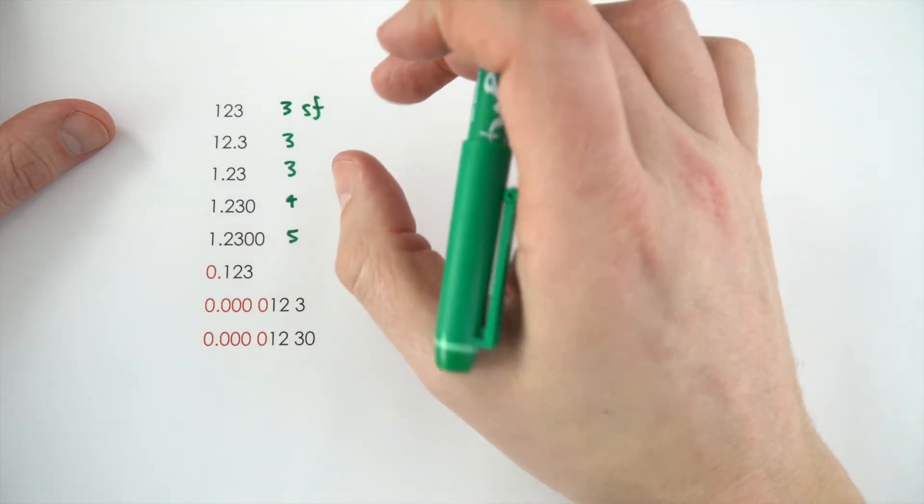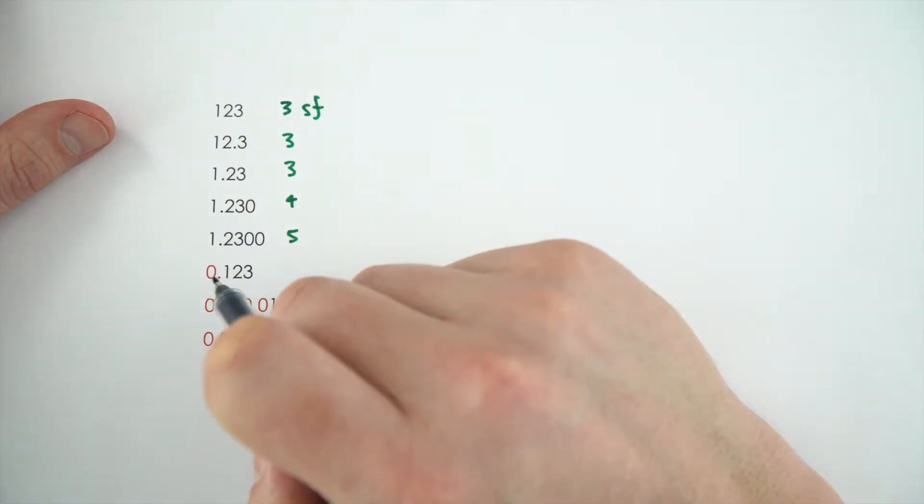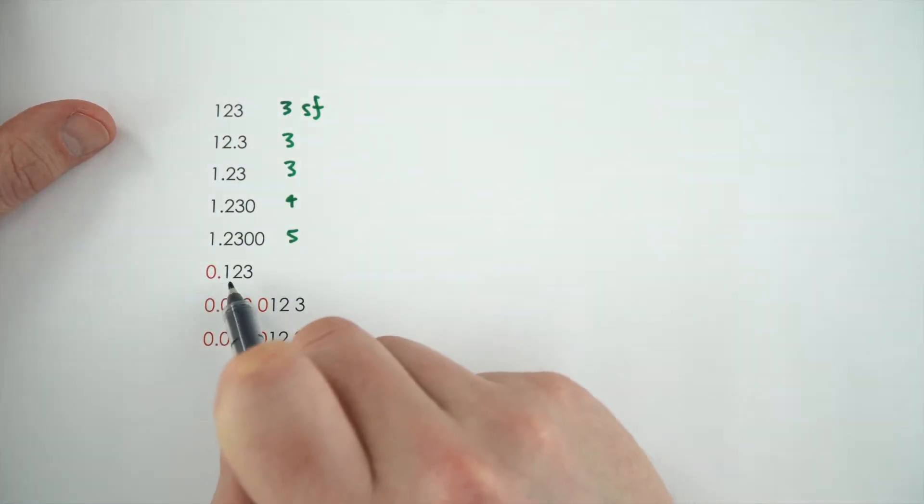Things get a little bit more complicated when you have numbers which have zero at the start. So, 0.123, although there's four figures, the first zero doesn't add to the significance. So, this one is given to three significant figures,